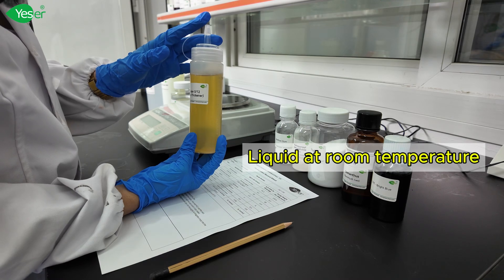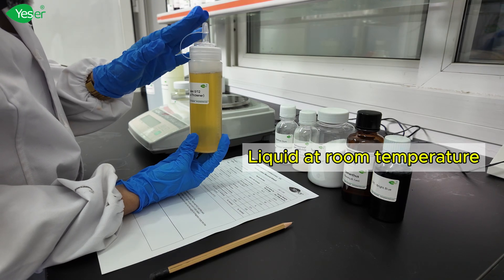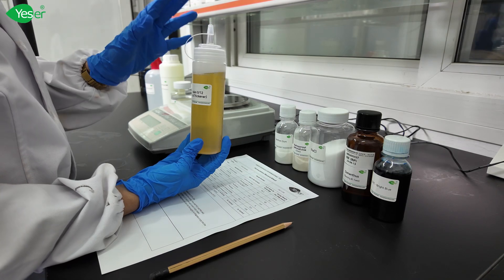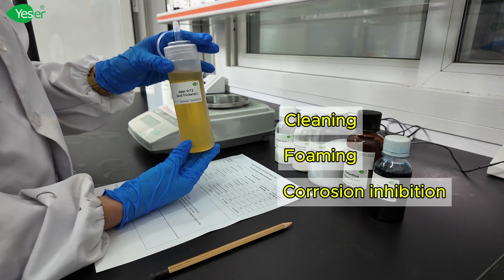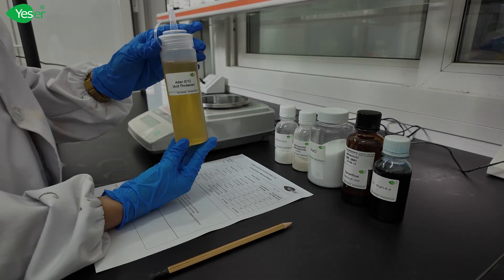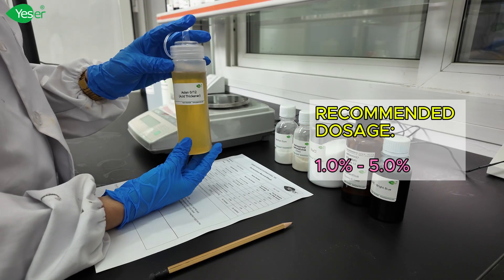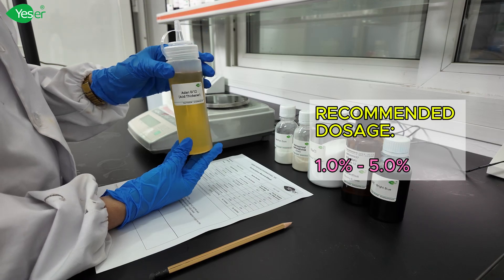Aslan 012 is liquid at room temperature, so it's easy for adding and processing. It has the effect of cleaning, foaming, and corrosion inhibition, which is perfect for toilets with metal surfaces. The recommended dosage for Yassir Aslan 012 in detergents is 1 to 5%.